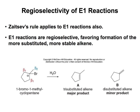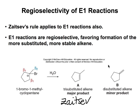The same regioselectivity rule from E2 applies to E1. When you have different types of beta hydrogens available, the major product is the one that results in the more substituted alkene — that is the Zaitsev product. You can also get some of the least substituted alkene as a minor product.